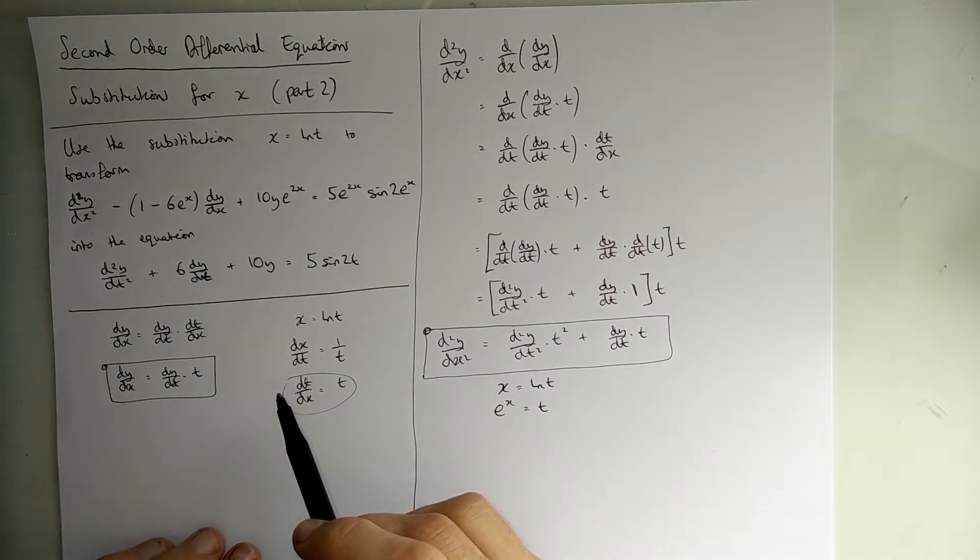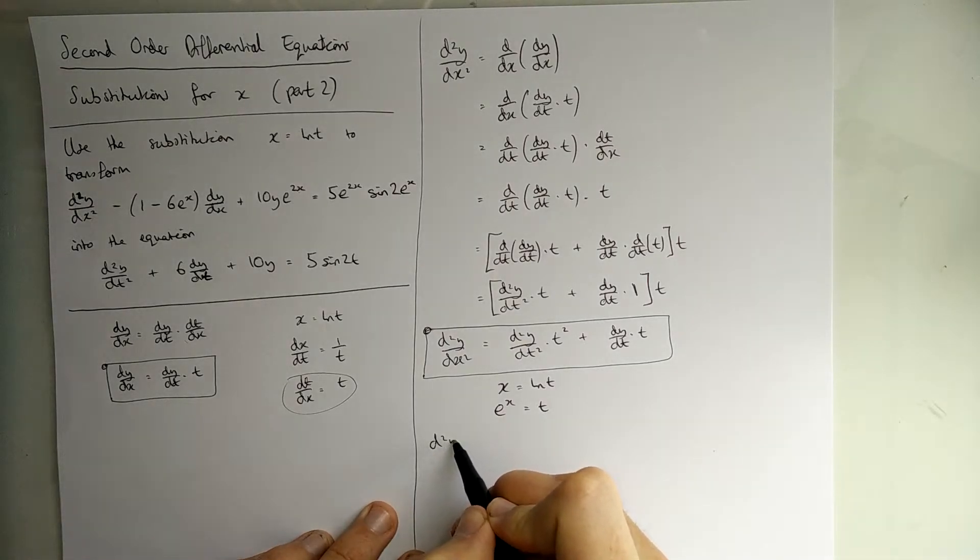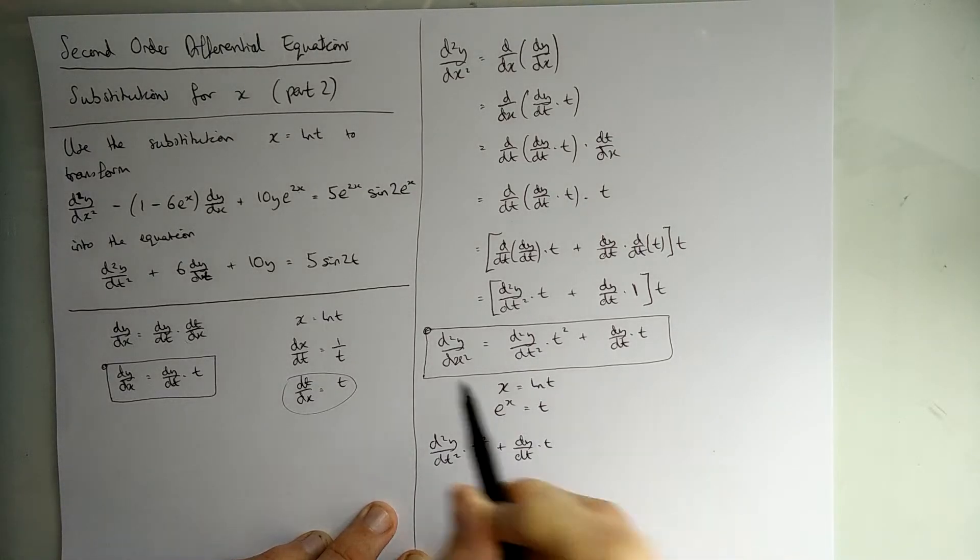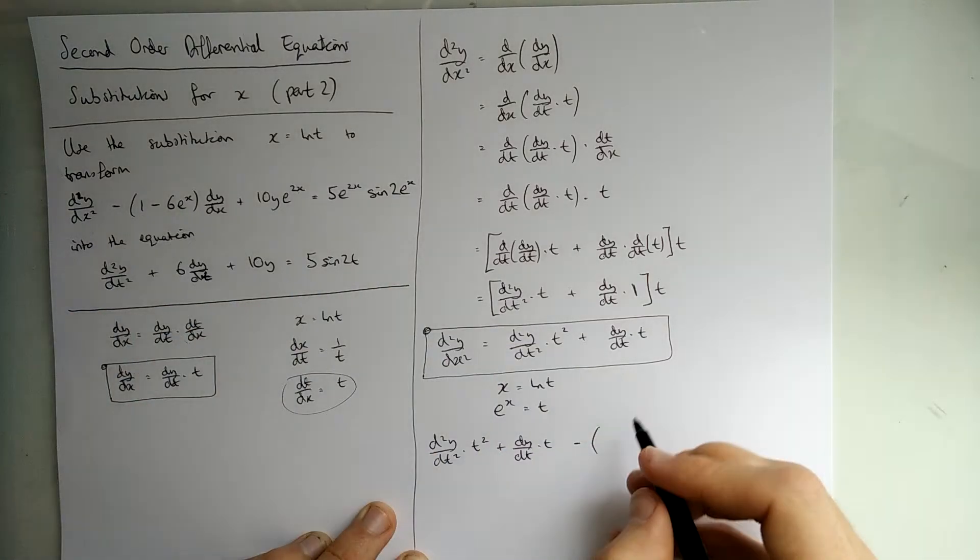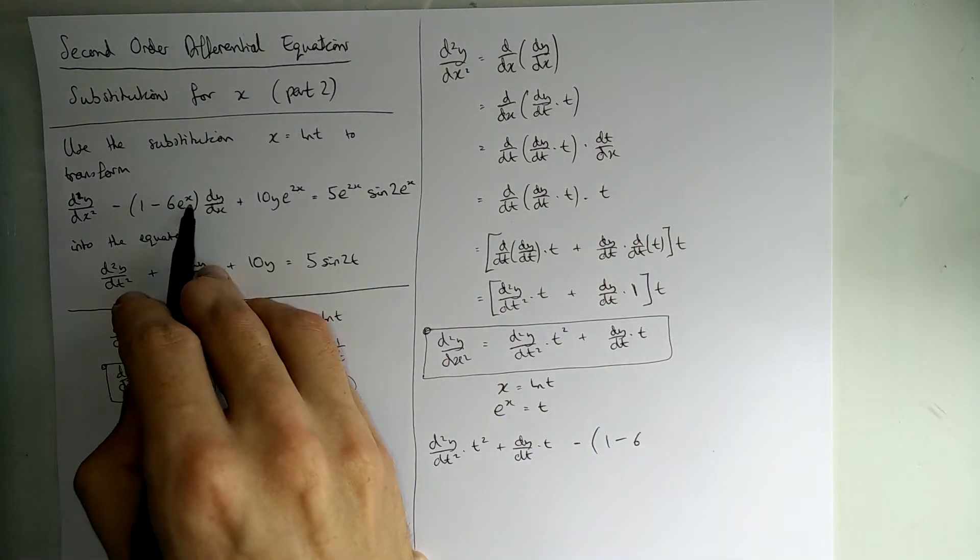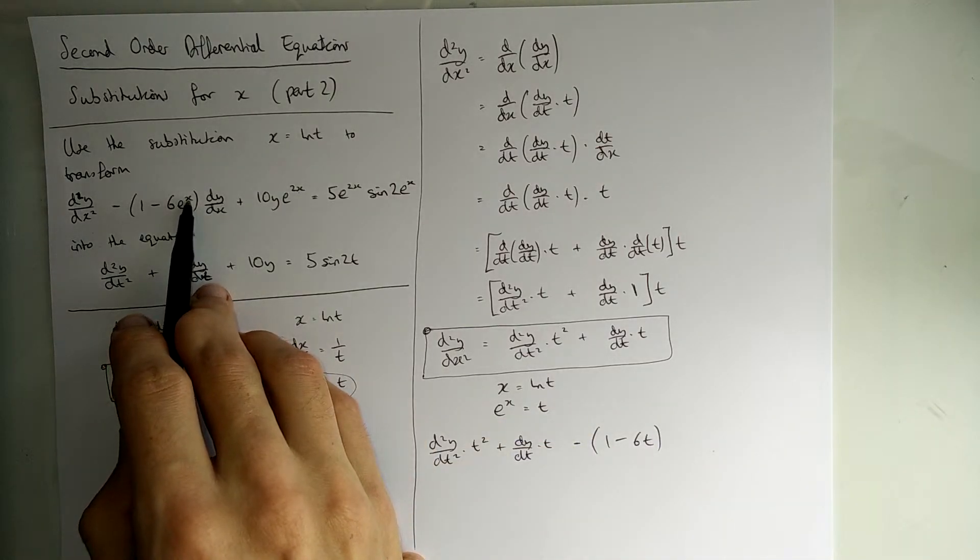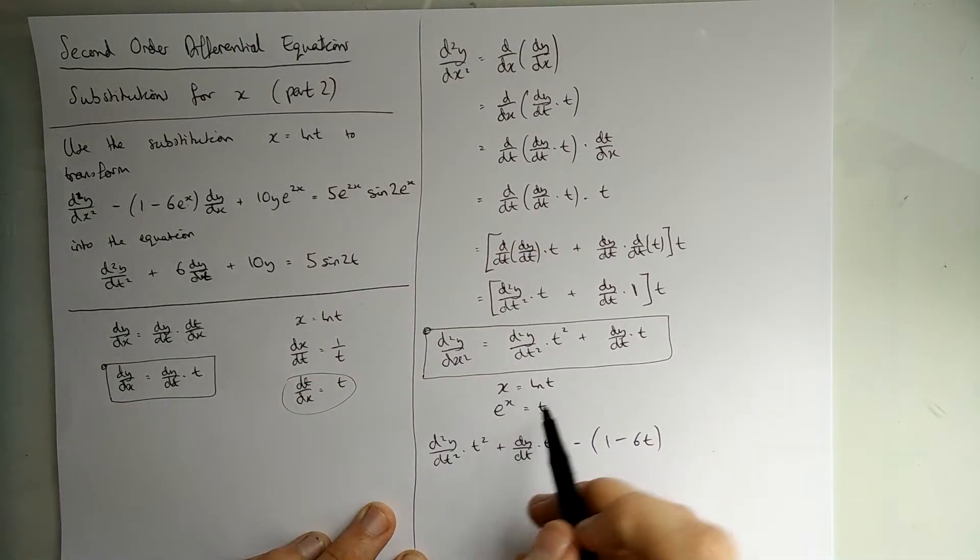Let's put these things into here now. So, we're starting with this d²y/dx² and plugging this thing in instead. So, d²y/dt² times by t² plus dy/dt times by t. That's that first thing. Then minus brackets 1 minus 6e^x which is t. See, if you had just put in the ln t, you've just got e to the ln t which would still be t, right? So, it wouldn't really matter if you hadn't noticed this.